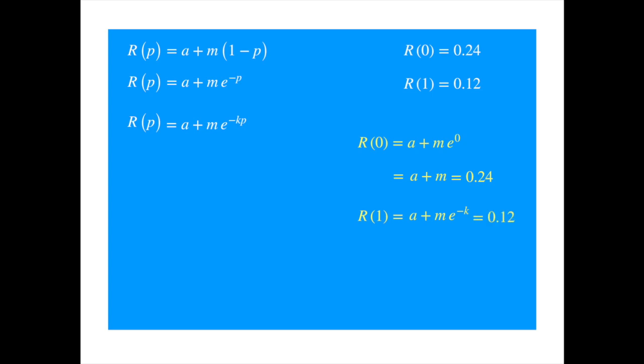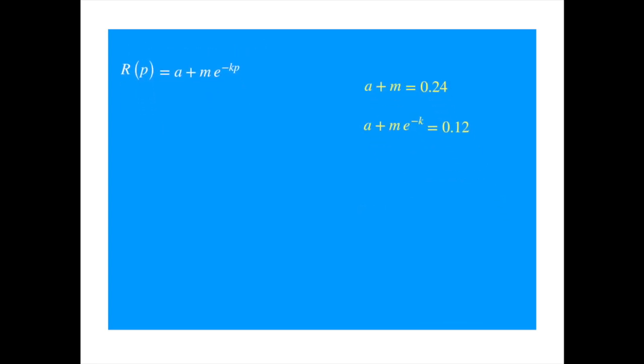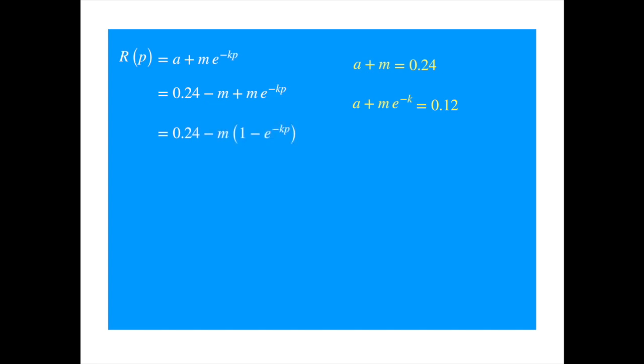Now, we need to solve these two equations for alpha and m. We know from the first equation that alpha equals 0.24 minus m. So substituting for alpha, we get... Now, let's factor m. So we get... Now, let's solve the second equation on the right-hand side for m.